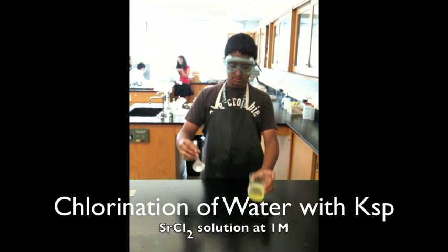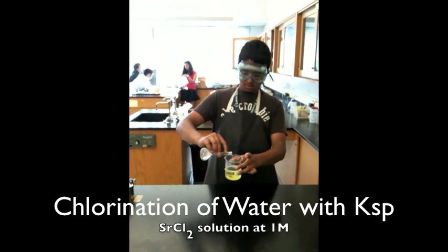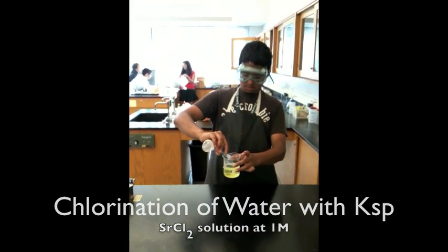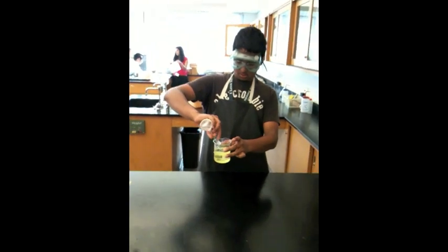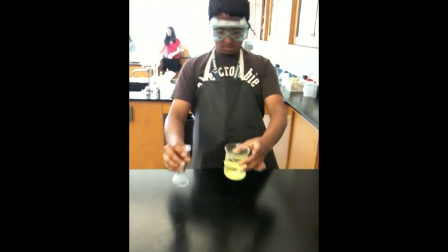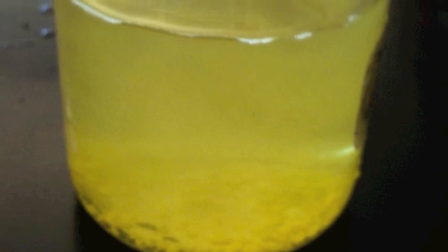Today, we face a problem of contaminated water. This water that we are experimenting with today is contaminated with the carcinogen, the chromate ion. While using the principles of Ksp, we will use the strontium ion to create the precipitate strontium chromate. With filtration, we will be able to filter out the chromate ion in the form of the solid and have clear water once again.